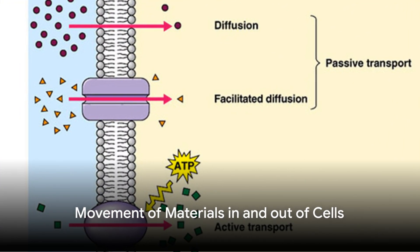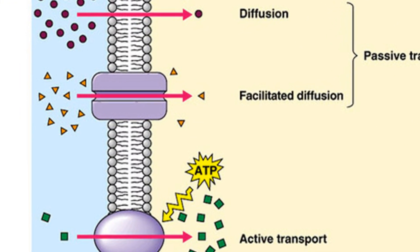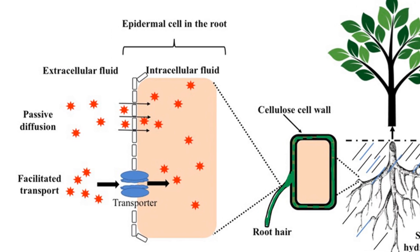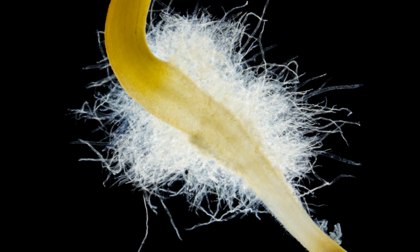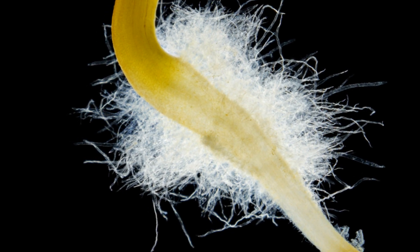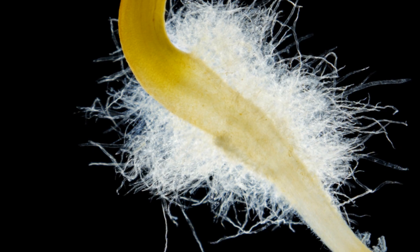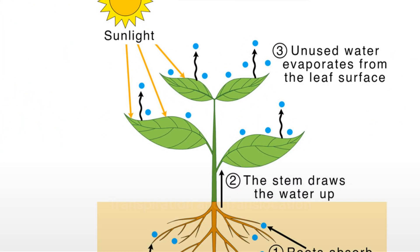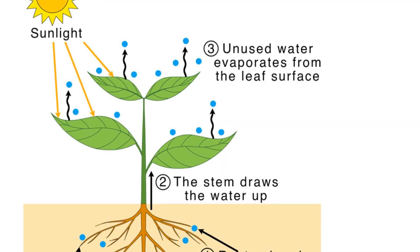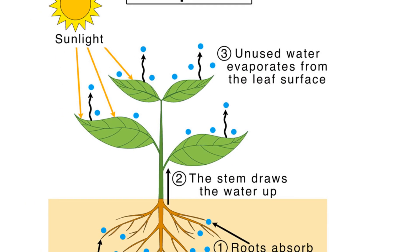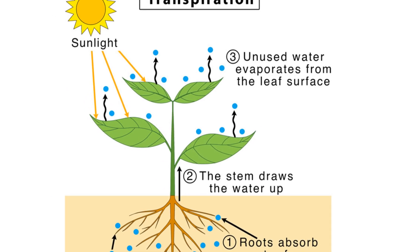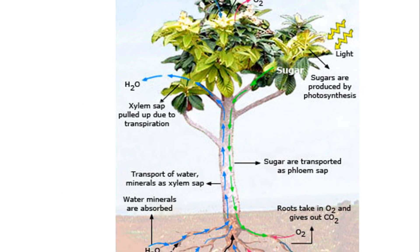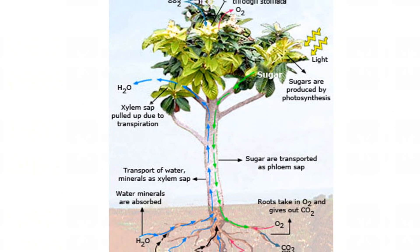Materials move into, through and out of cells in a variety of ways. Root hairs, for instance, are specialized for absorption of water and mineral salts. They have a large surface area and thin walls, which makes them perfect for this job. Now let's talk about two crucial processes: transpiration and translocation. Transpiration is the process where water evaporates from the leaves, creating a pull that draws up water from the roots. Translocation is the movement of sugars from leaves to other parts of the plant.